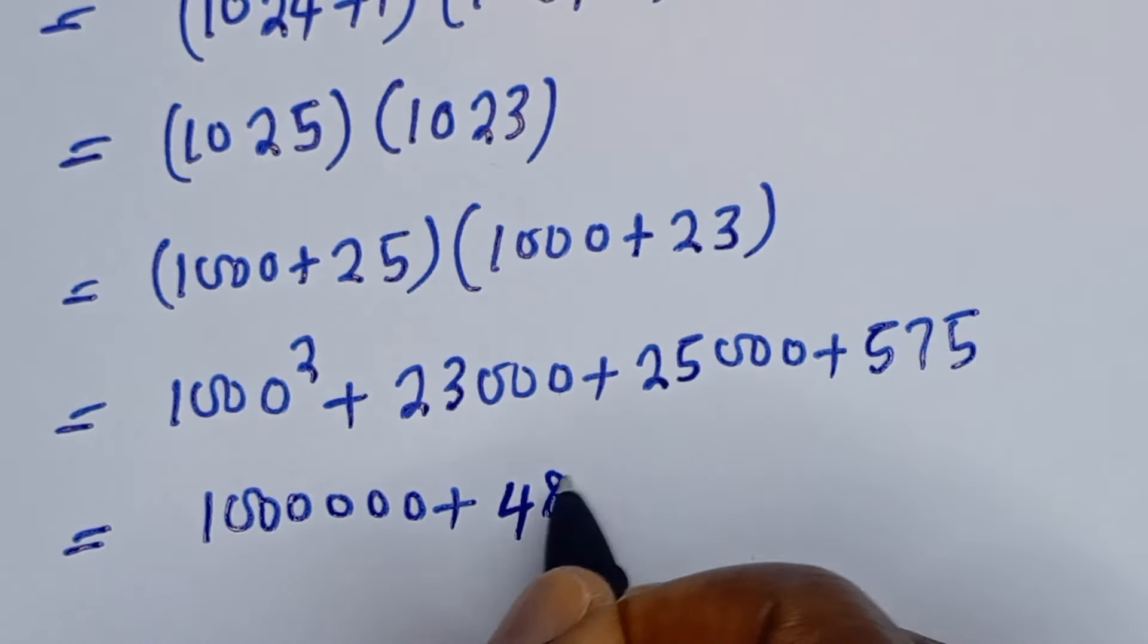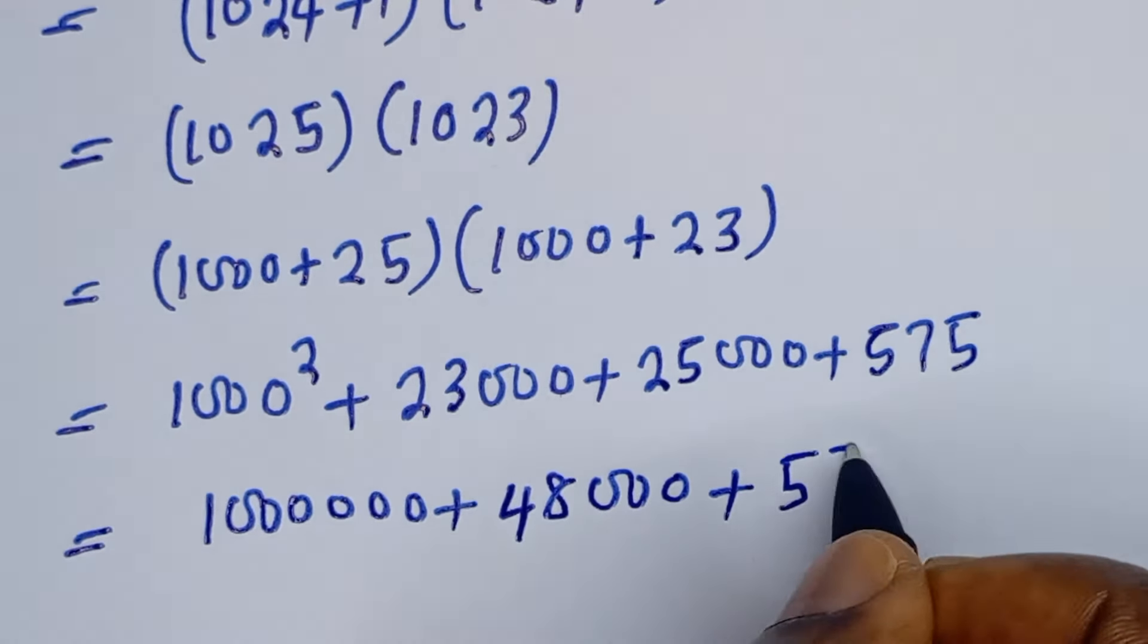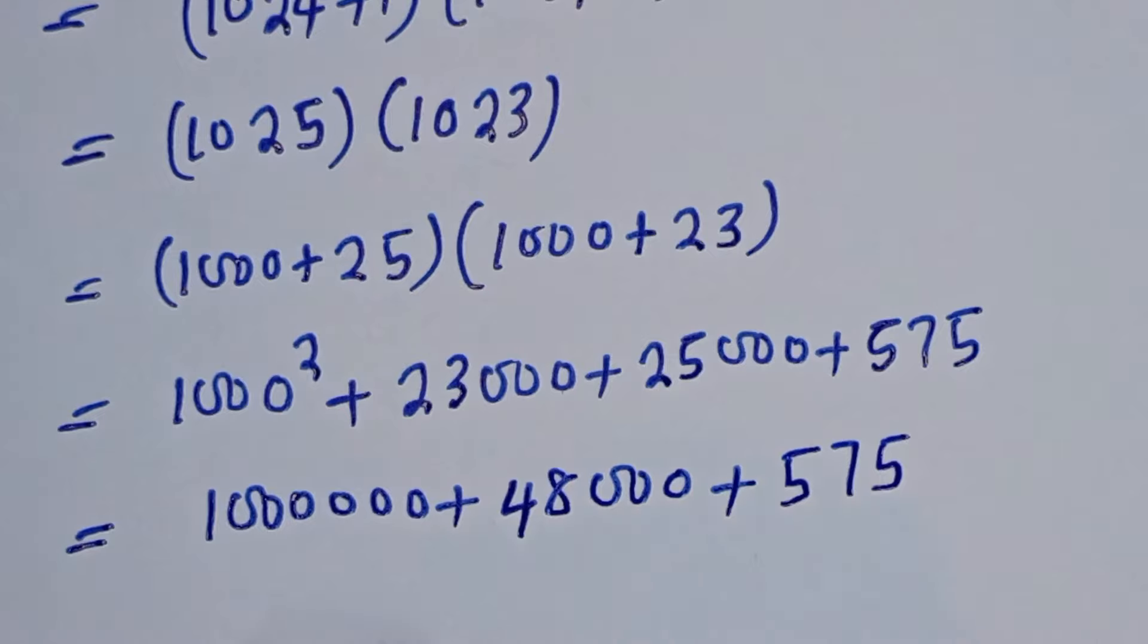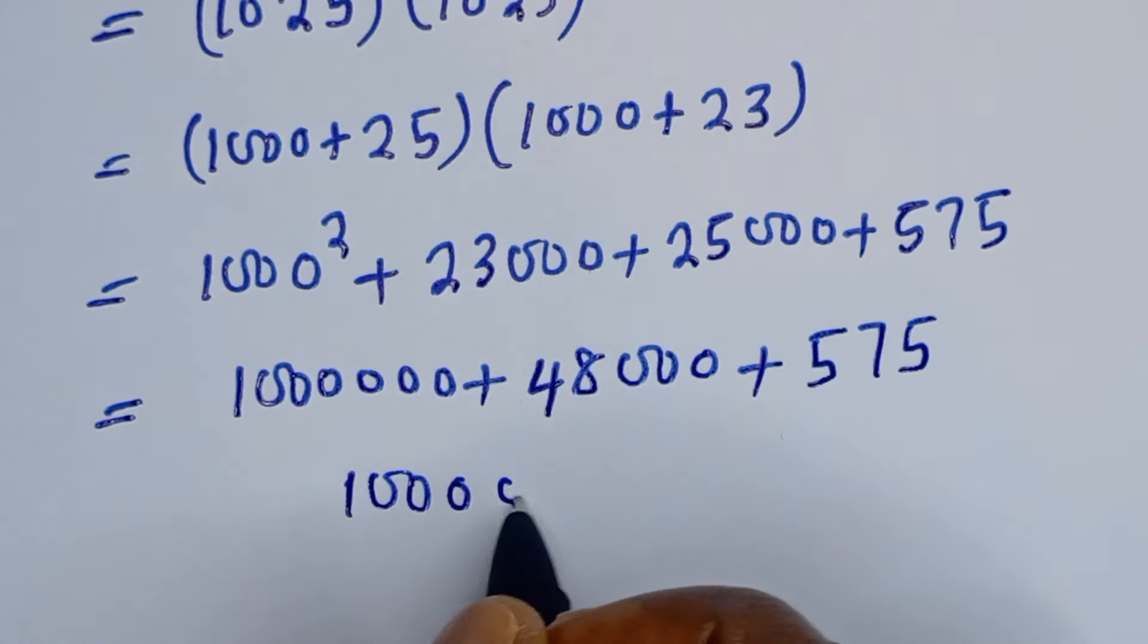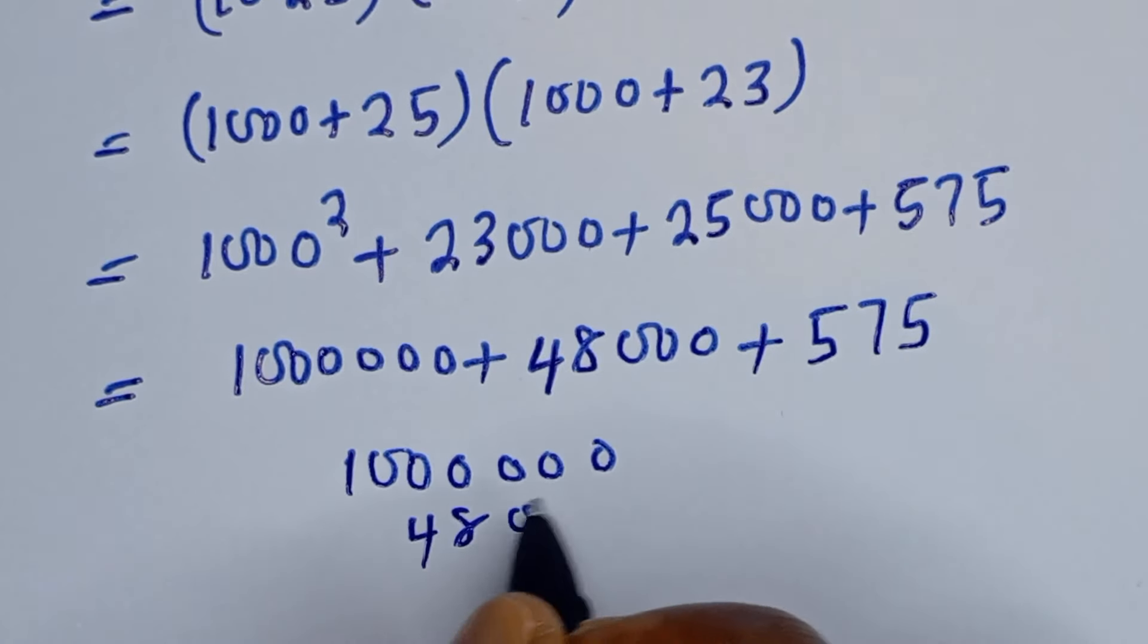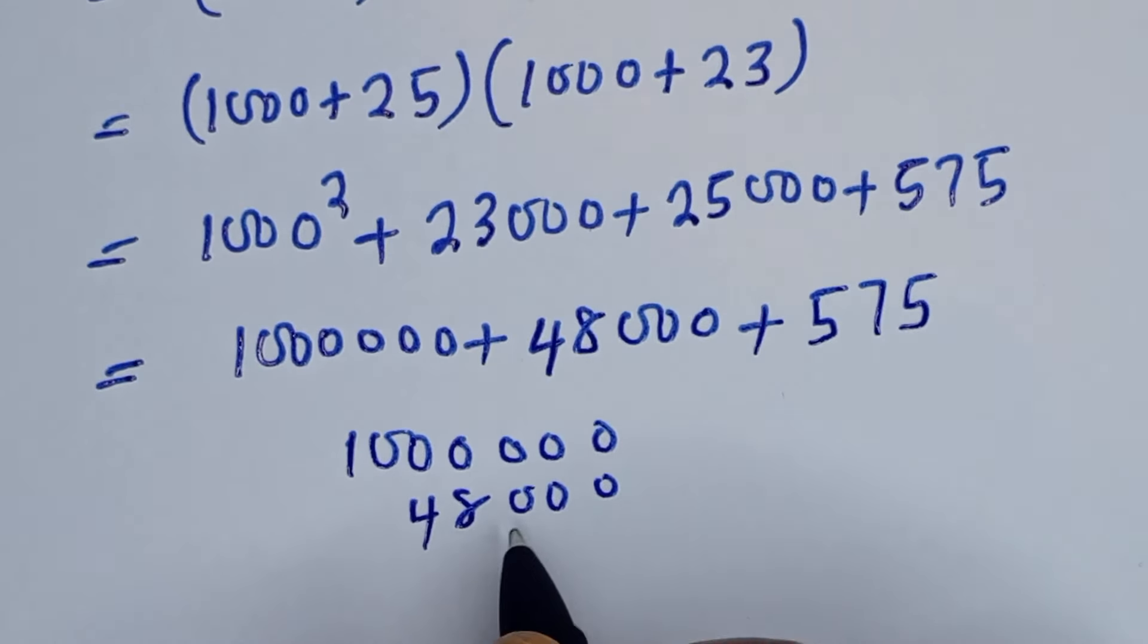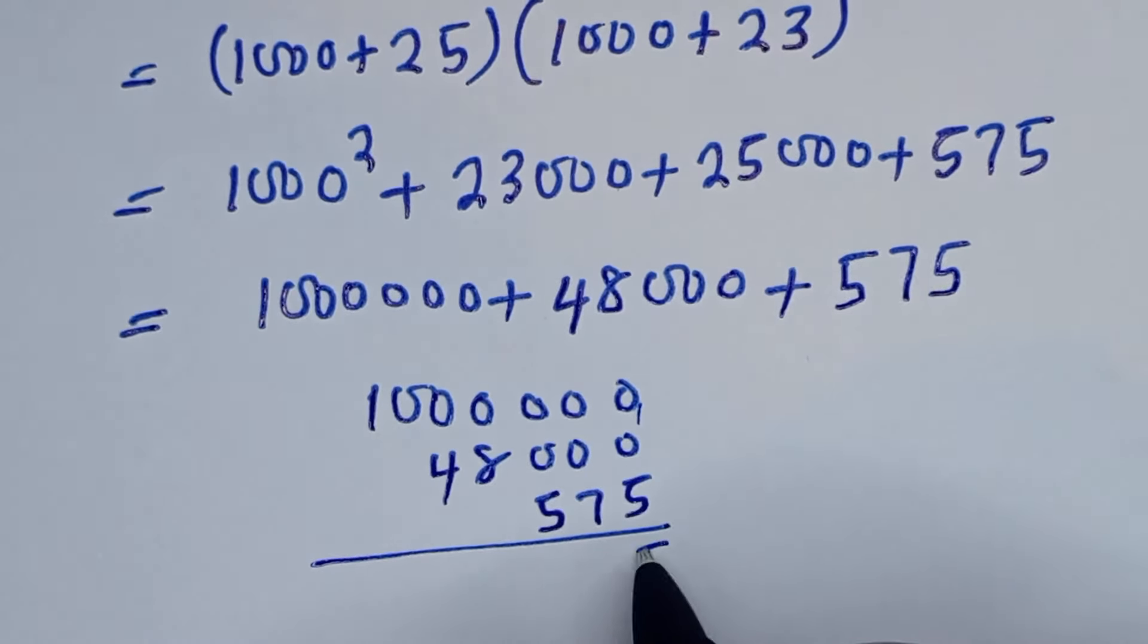Plus 575. Now let's add everything together. Here is 48,000 and here is 575. Then this plus 0, we have 5.